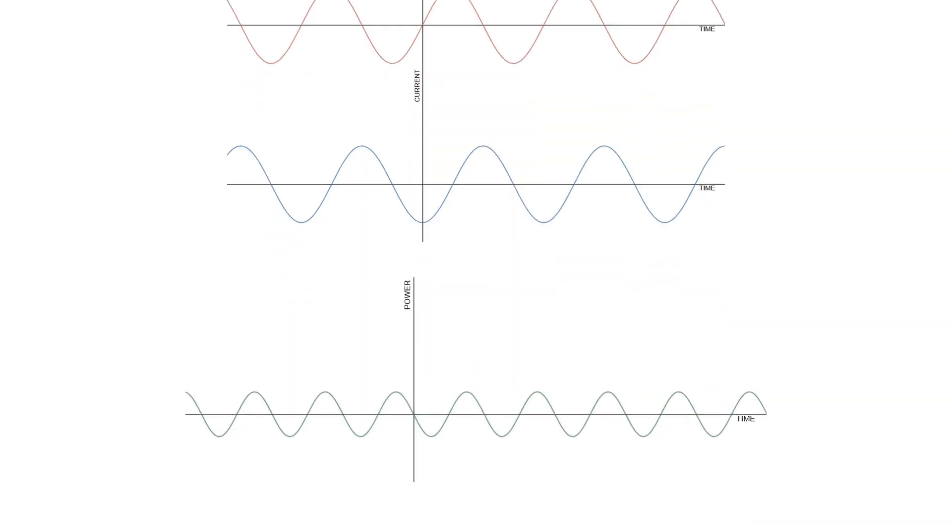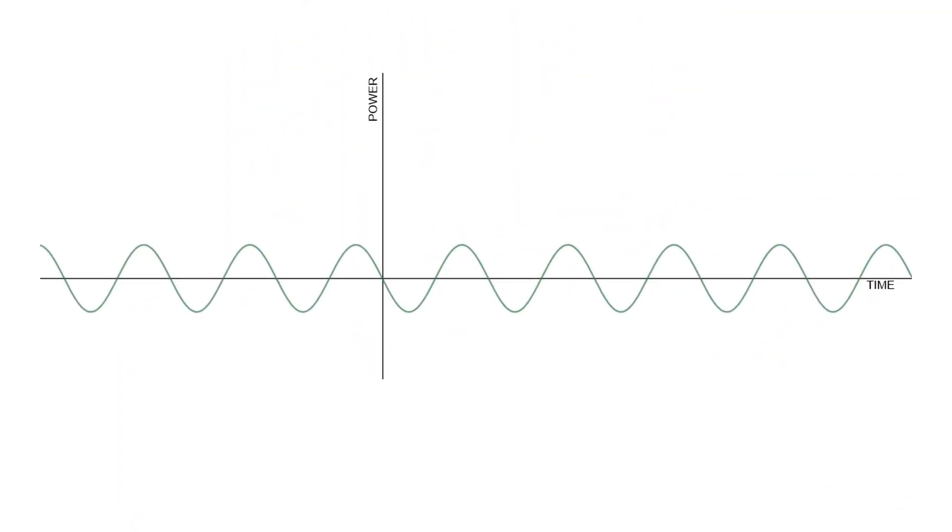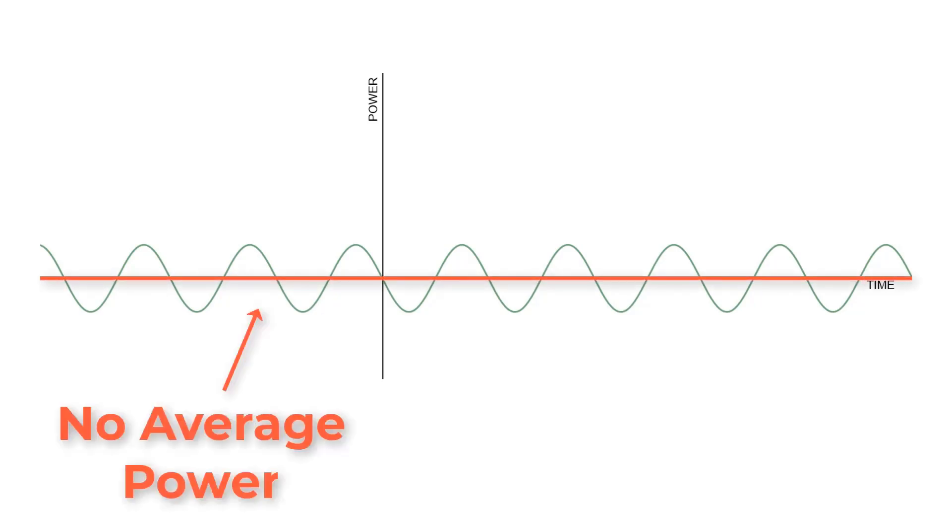Calculate now the average for the power waveform. It's equal to zero. No active power or no useful power here. It's a power that is going back and forth.